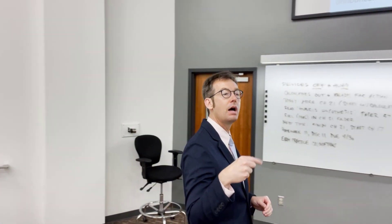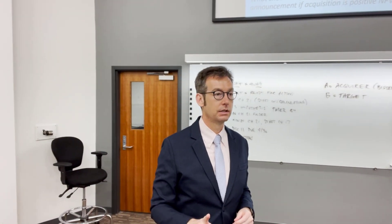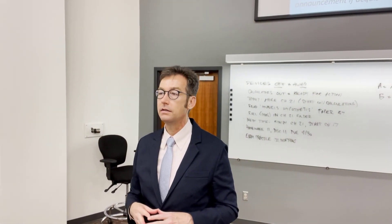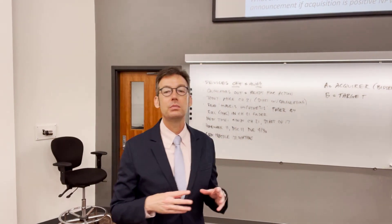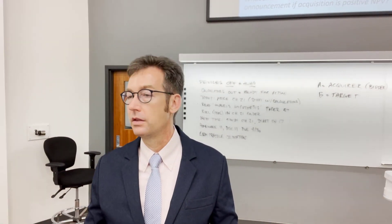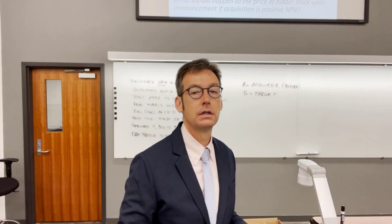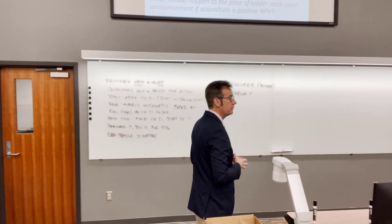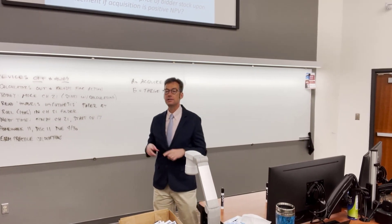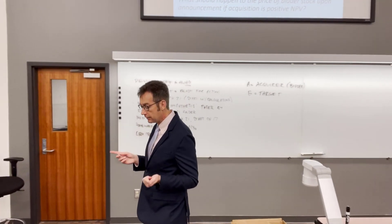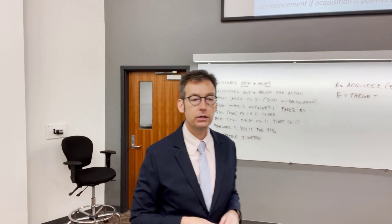We talked about the merger of two colleges. When you put them together, there are cost savings — you only need one dean, one dean's secretary, maybe two associate deans instead of four. There are gains from combining. That change in value is called delta V. Delta means change. V sub AB is the value of the merged firm. V sub A is the stand-alone value of the acquirer, and V sub B is the stand-alone value of the target.